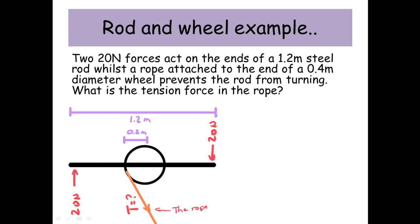Rod and wheel example. Two 20 Newton forces act on the ends of a 1.2 meter steel rod, whilst a rope attached to the end of a 0.4 meter diameter wheel prevents the rod from turning. What's the tension force in the rope?